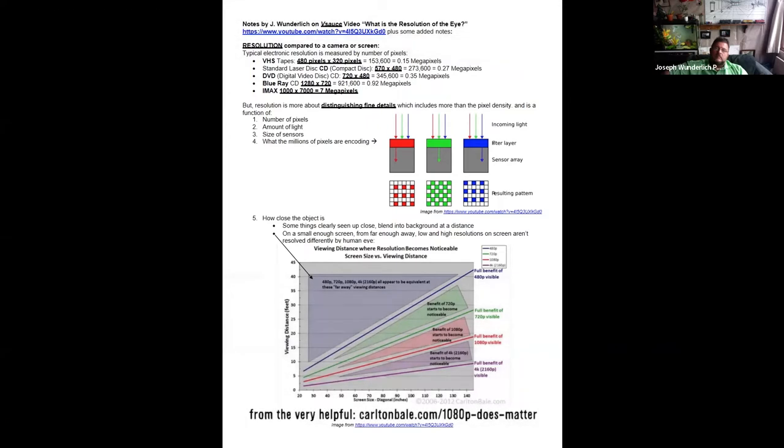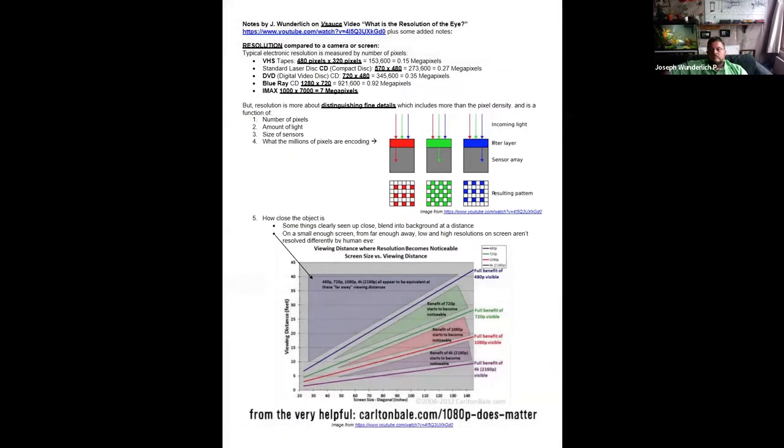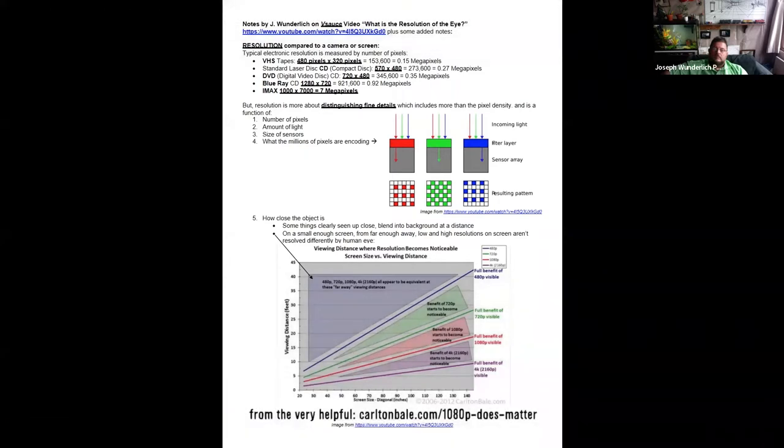However, resolution is more about distinguishing fine details, which includes more than the pixel density. It's a function of a number of things: the number of pixels, the amount of light, the size of the sensors, and what actually the millions of pixels are encoding. We'll see a little more of this when we get to monitors.